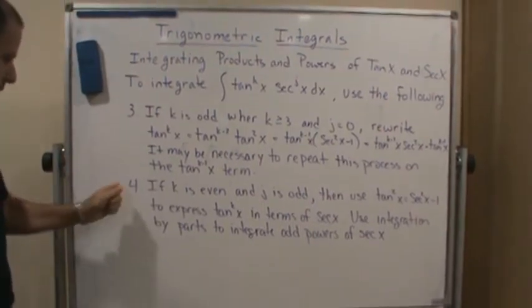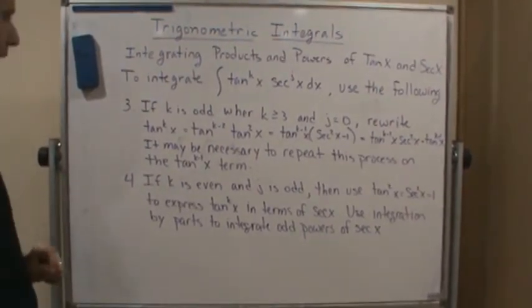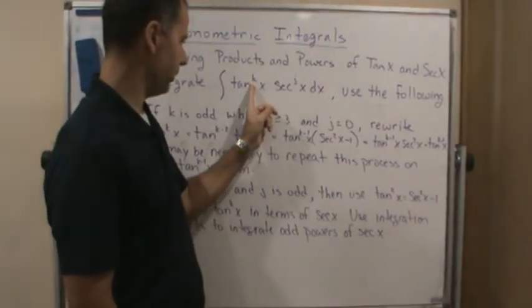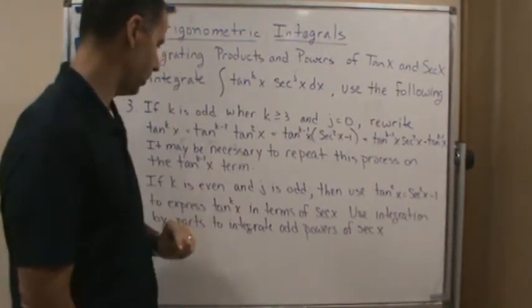Now the last strategy, strategy four, is what if k is even and j is odd? What if you have an even power here and you have an odd power here?